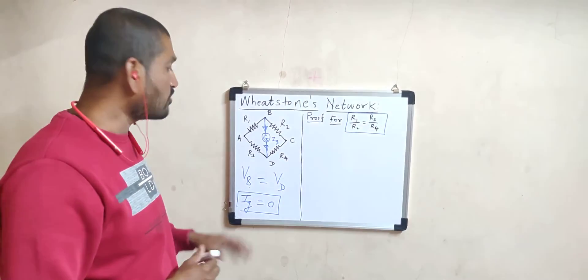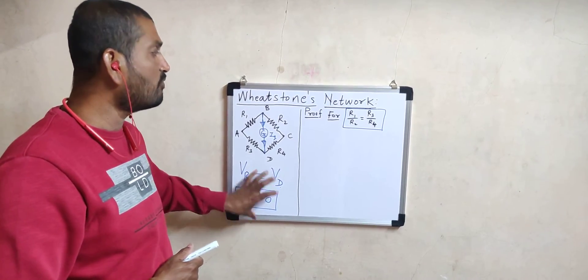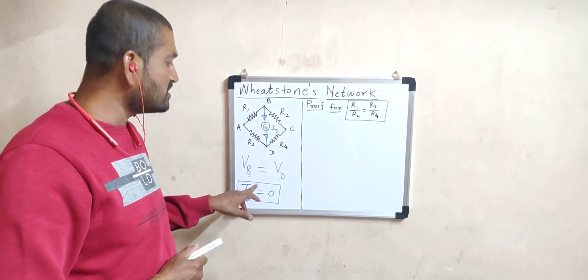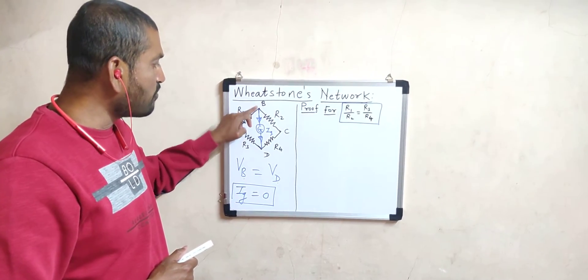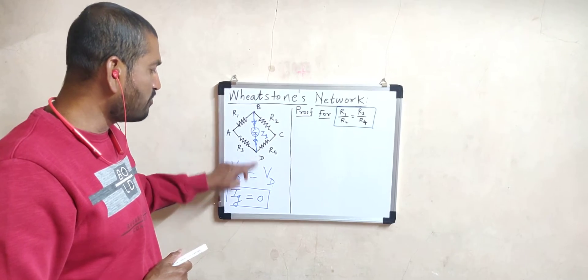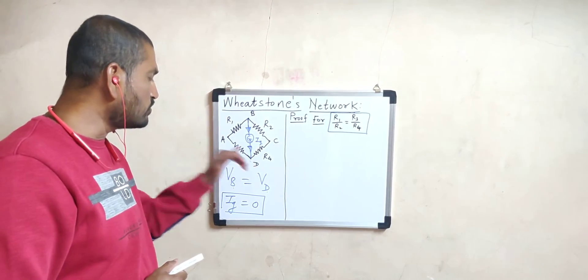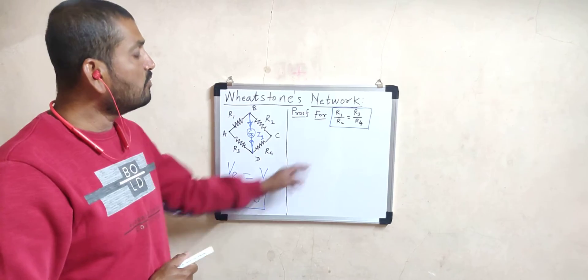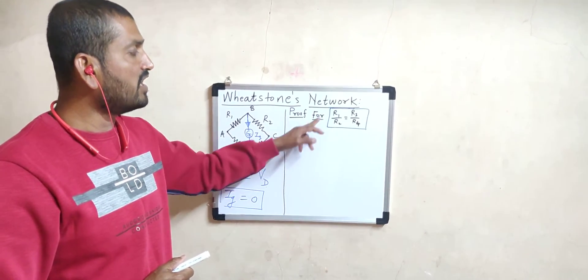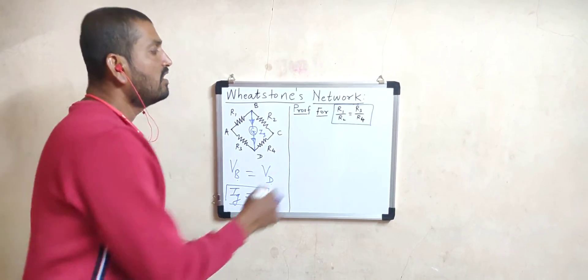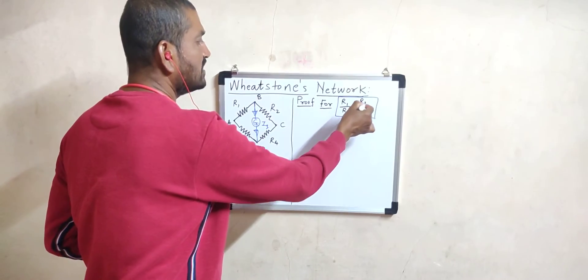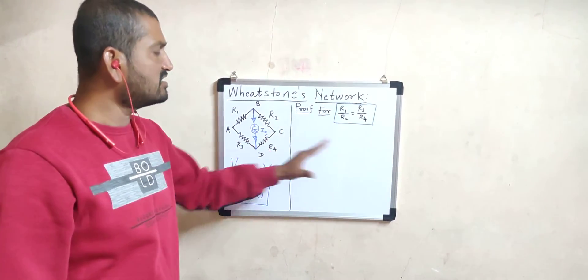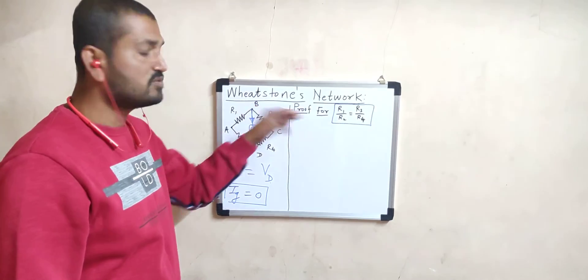This is called the balanced condition of Wheatstone's network. When the network is balanced — that is, the potential at B equals the potential at D, and no current flows through the middle branch — then the four resistors are related by the formula R1/R2 = R3/R4. This is the balancing equation of the balanced Wheatstone's network.